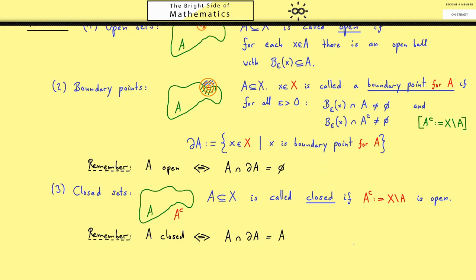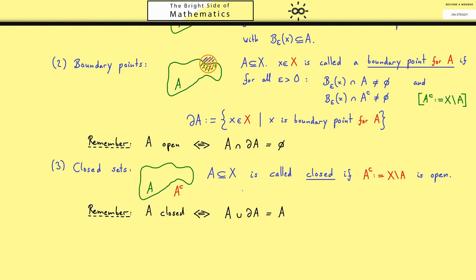Now the last notion for today will be the so called closure. The name already tells you if you start with an arbitrary subset A what you want to get out is a closed subset. How to get this you might already know. You just add all the missing boundary points. So you form the union with the boundary. And this is what we call the closure of A. And we denote that with A overline. Now please remember this always defines a closed set. Indeed it's the smallest closed set that still contains A.